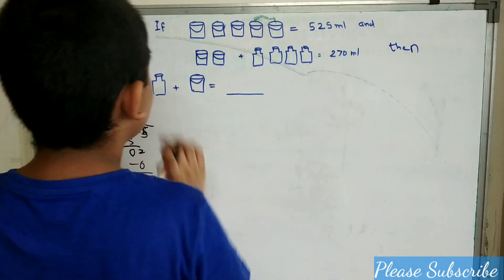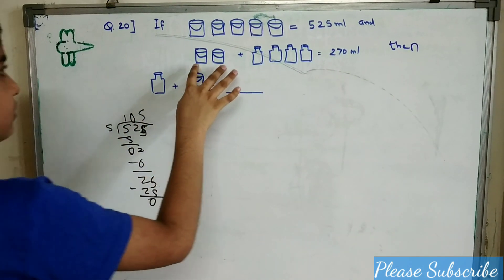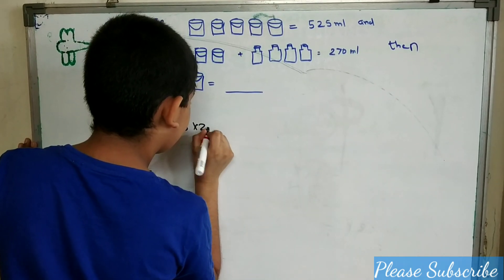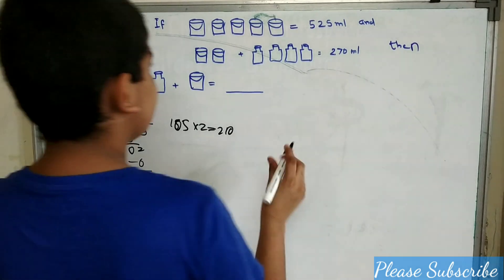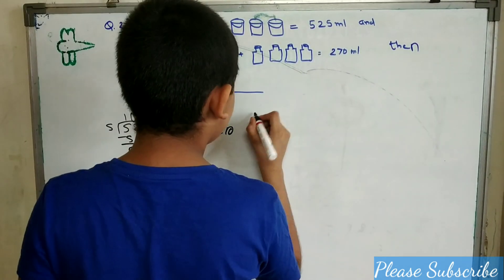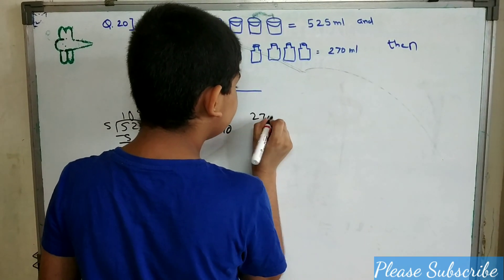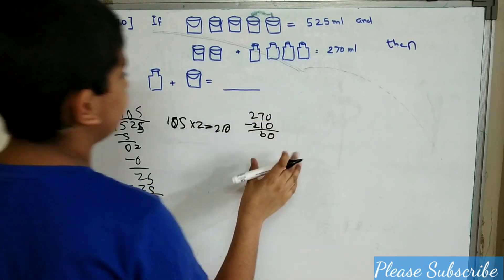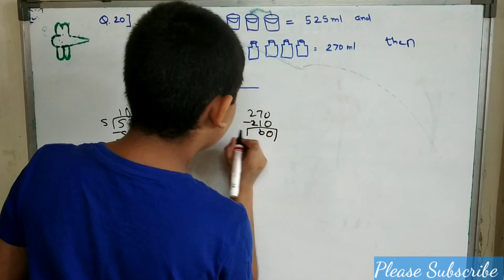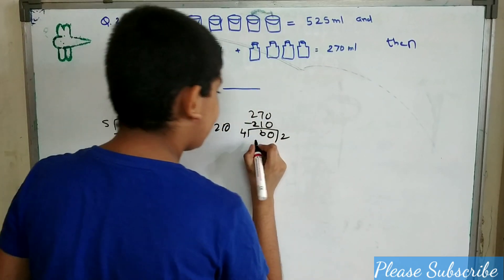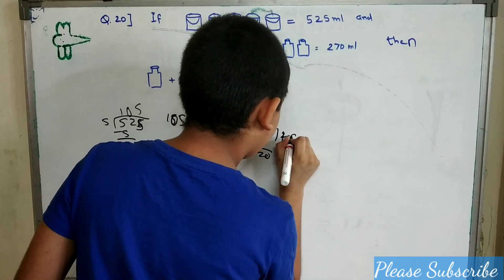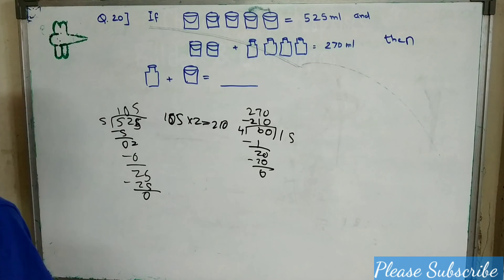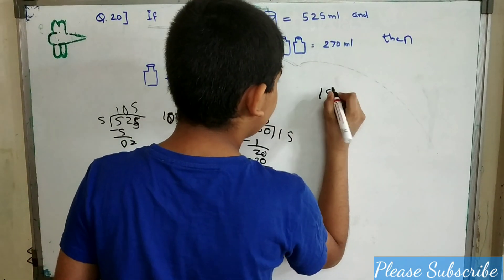2 buckets equals 105 times 2, which is 210 ml. To find the capacity of 4 bottles, we subtract 210 from 270, which gives 60 ml. So 1 bottle is 60 divided by 4, which is 15 ml. Then 15 plus 105 gives our answer.